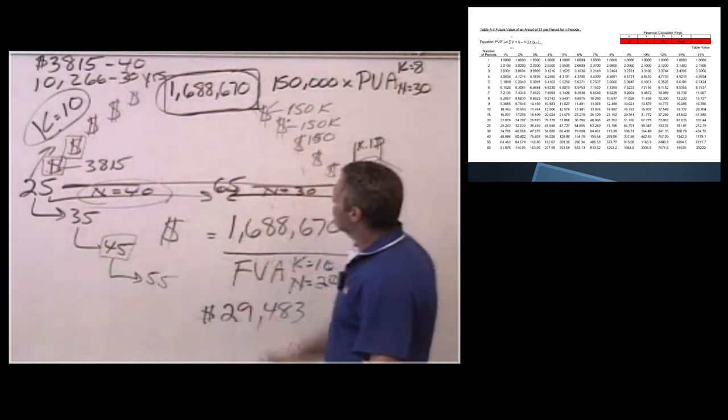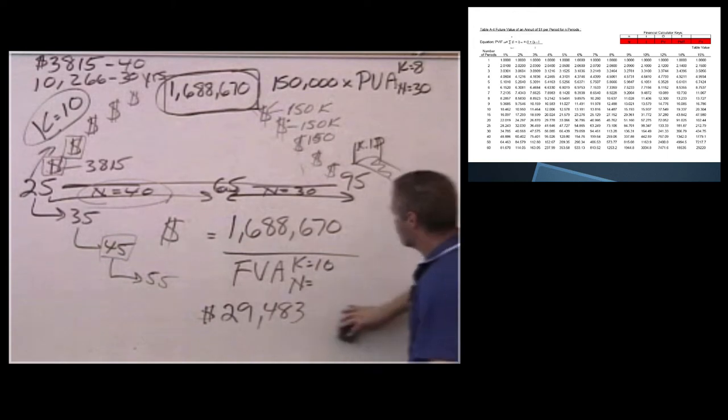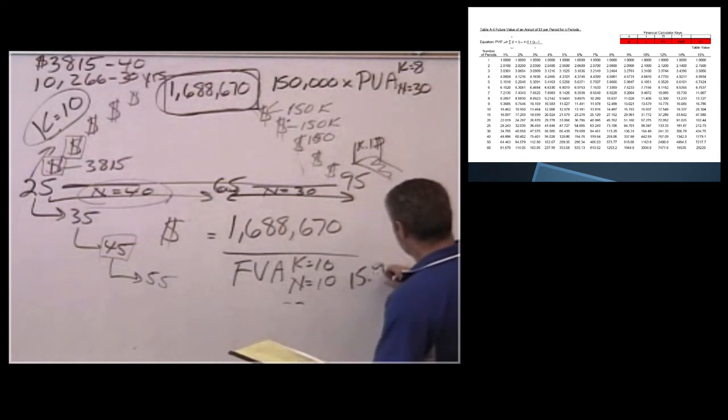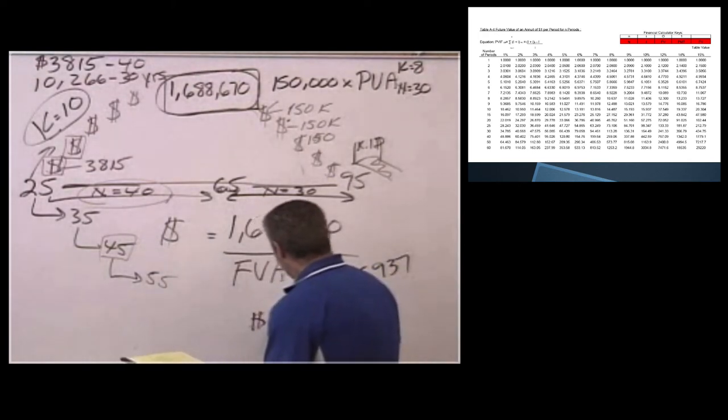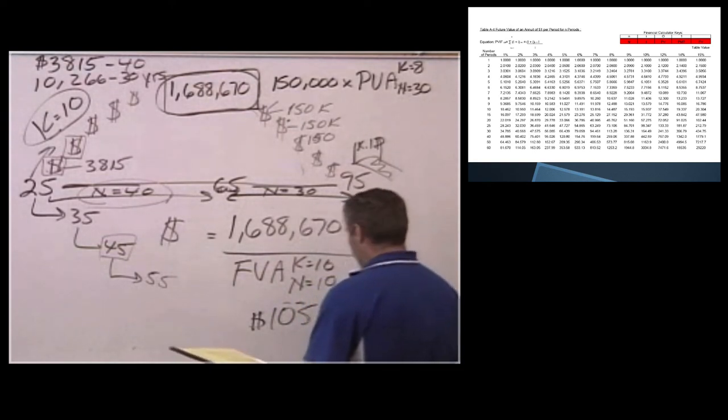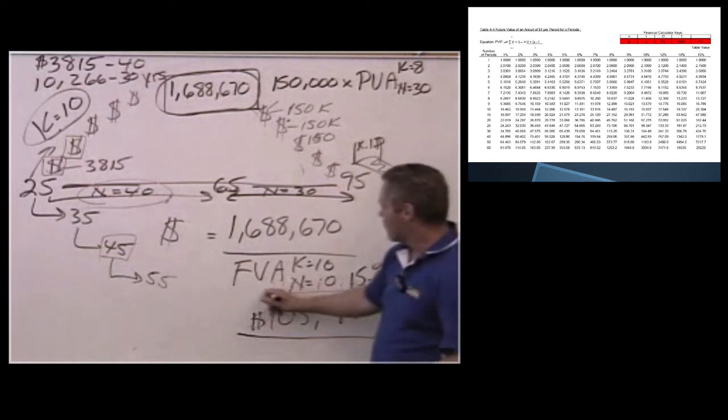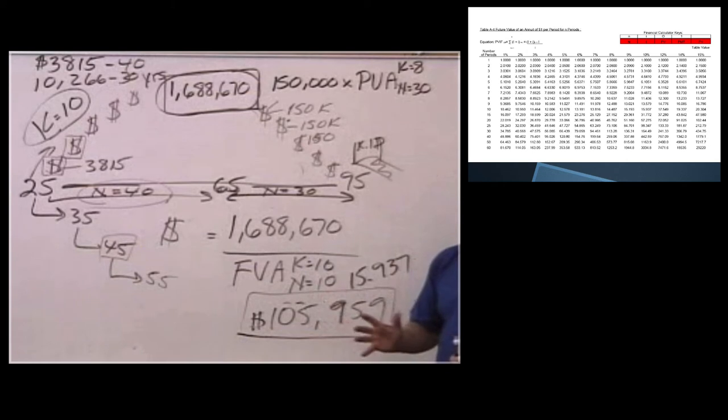If I'm waiting until I start at 55, I have 10 years to generate $1.6 million. So we know this is going to be an astronomical number. So we got the same equation, K equals 10, N equals 10. We take our factor and our factor is 15.937. I divide that in and I have to save $105,959. That's a big number. If we're looking at that, we're probably in trouble. And a number of people find themselves in this position.